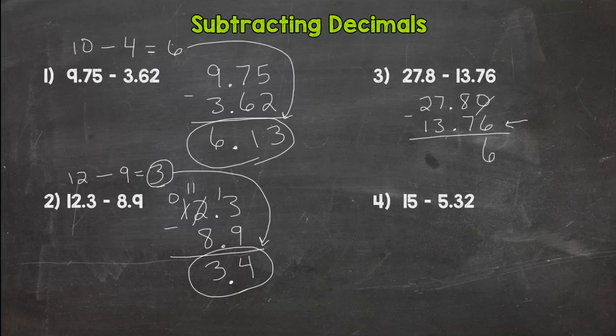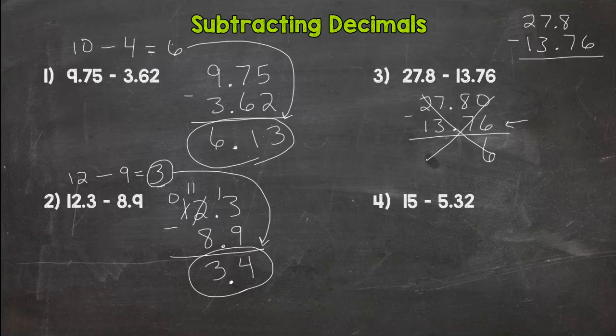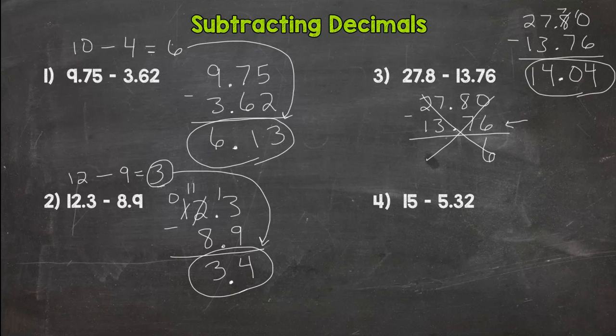I'm going to line up here in the top right. I put my placeholder zero. Zero minus six is not six; I need to borrow. I get a ten here. Ten minus six is four. Seven minus seven is zero. Bring that decimal straight down. Seven minus three is four, and two minus one is one. I get 14.04. Let's see if that is a reasonable answer.